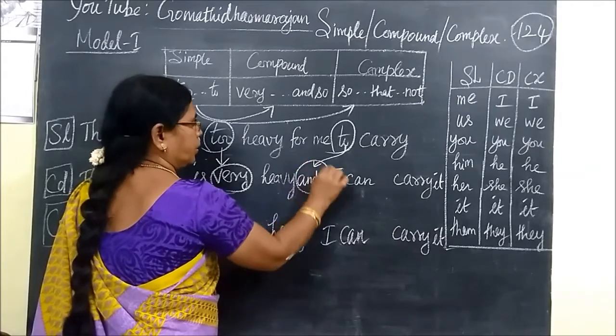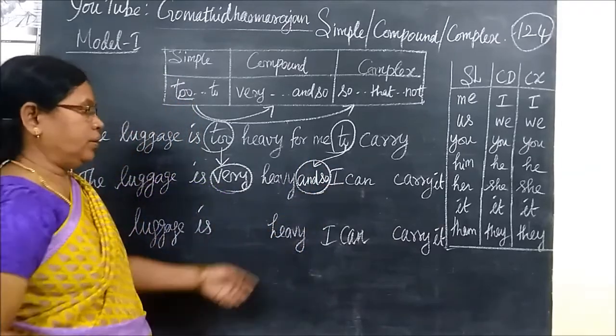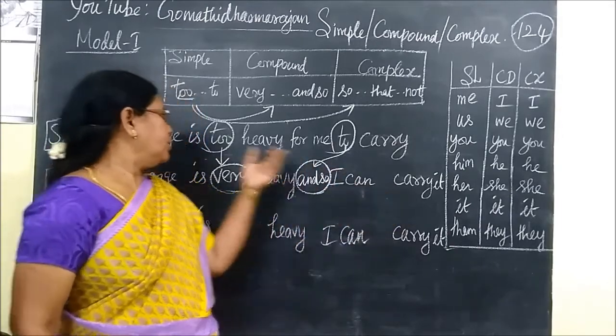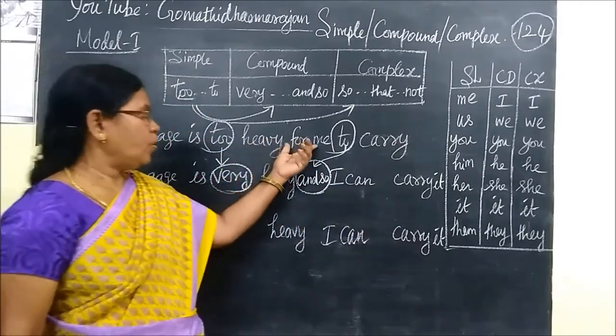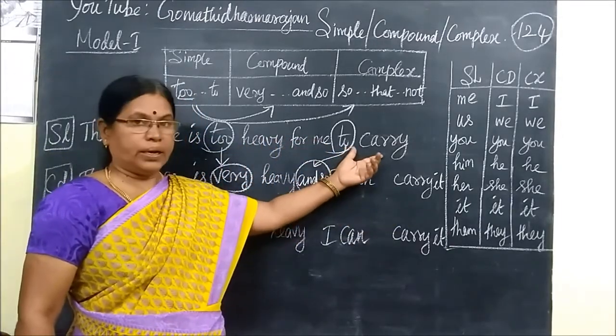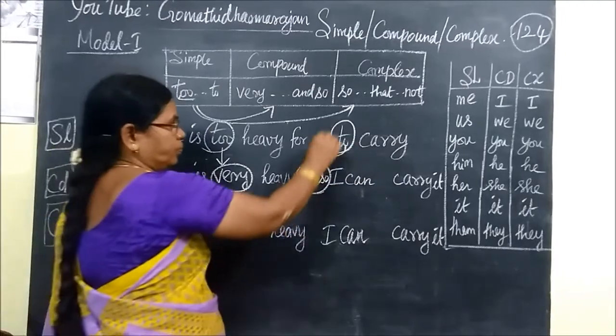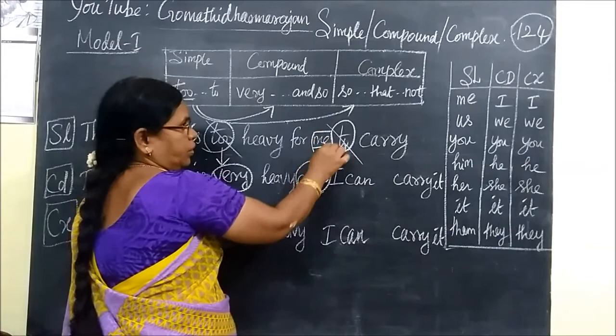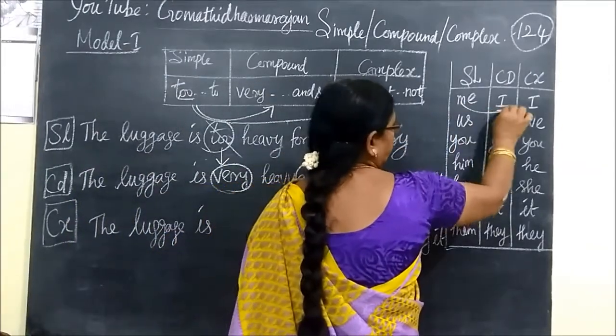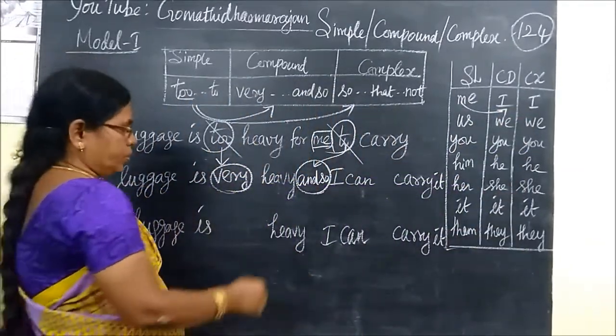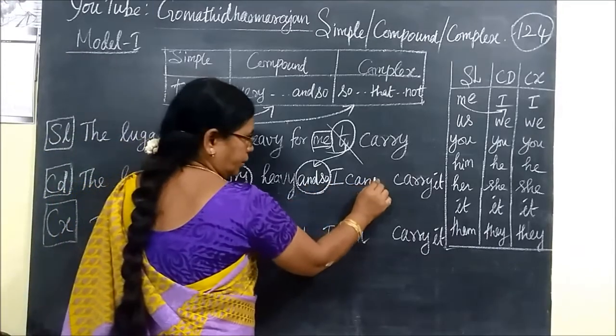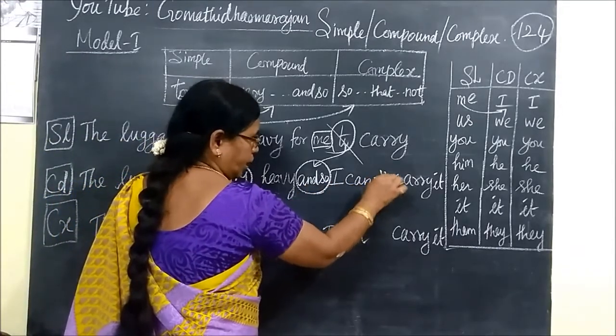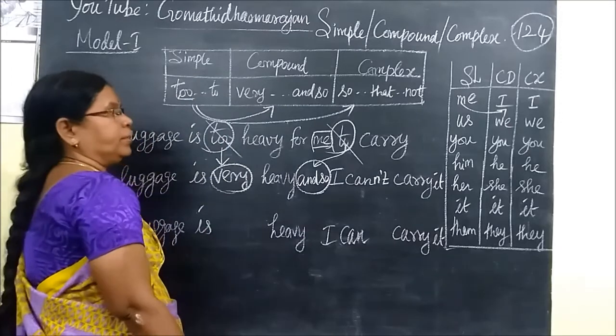And so, you hold it, you write I cannot carry it. The luggage is too heavy for me to carry. In this 2 editors, you read I cannot carry it, I can carry it, so the luggage is very heavy and so I can carry it.